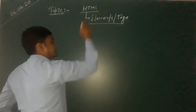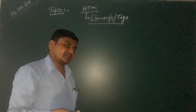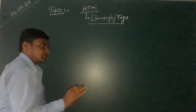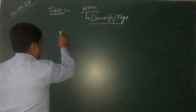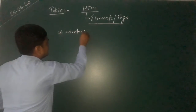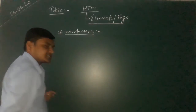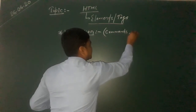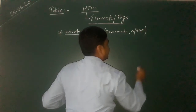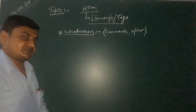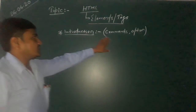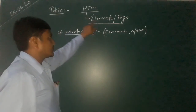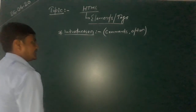We already did a brief explanation of elements and tags in the previous video. Today we will discuss something more about elements or tags. Tags are similar to commands, options, or orders that we follow to perform an activity in any other kind of program. Similarly, all kinds of commands, options, and actions in HTML are known as elements or tags.